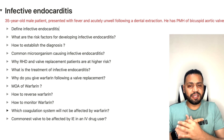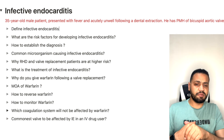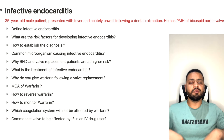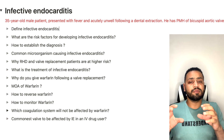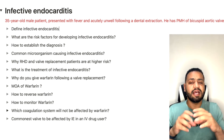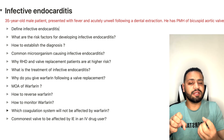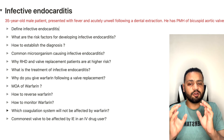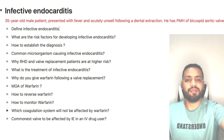The commonest valve to be affected by infective endocarditis in IV drug users is the tricuspid valve. The reasoning is that injection occurs through the arm, and blood returns to the heart via the inferior or superior vena cava, entering the right atrium first, then the right ventricle through the tricuspid valve. So the tricuspid valve is the commonest to be affected in those patients.